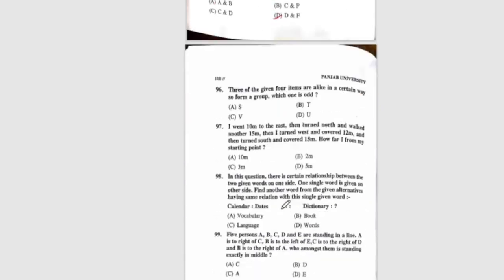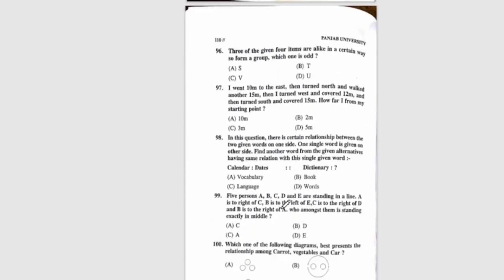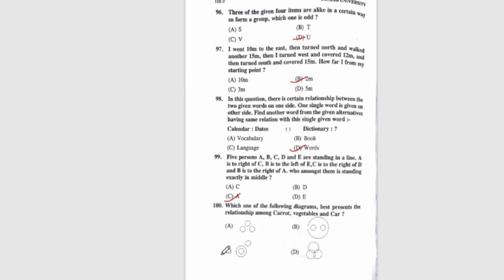Questions 92 through 95: The answers are B, B, B, A, and D respectively. Question 96: The correct answer is D. Question 97: The correct answer is B. Question 98: The correct answer is D. Question 99: The correct answer is option C. Question 100, the last question: The correct answer is option C.